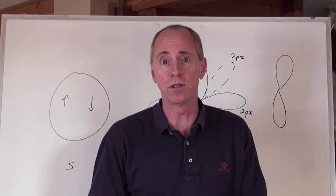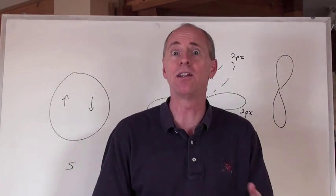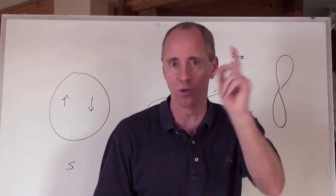And then when you get to the d orbitals, there's five of those, right? And they just have crazy shapes, and then there's f orbitals, and they have seven, and we'll get to that in a second.